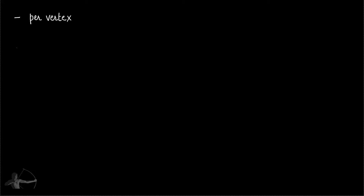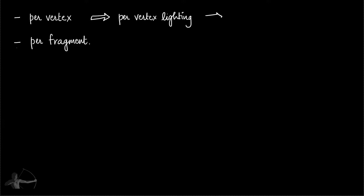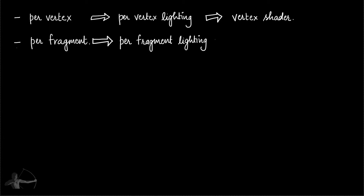The lighting calculation is done in the shader, and it can be done in two ways: it can be calculated per vertex, or it can be calculated per fragment. When lighting is calculated per vertex, it's called per-vertex lighting, and the calculation is done in the vertex shader. When the lighting calculation is done per fragment, it's called per-fragment lighting, and the calculation is done in the fragment shader.